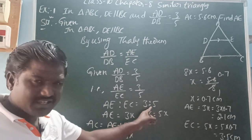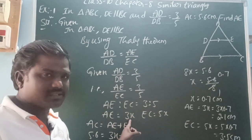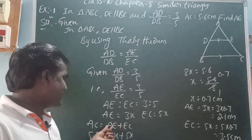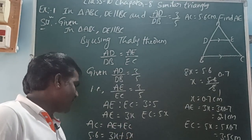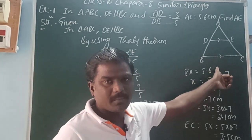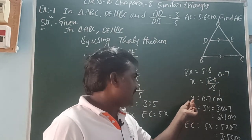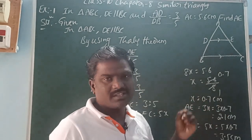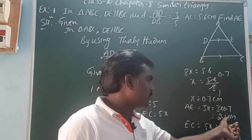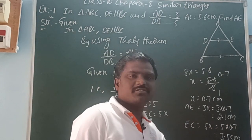AE has 3 parts and EC has 5 parts. Let each part be x, so AE equals 3x and EC equals 5x. AC equals AE plus EC, so 5.6 equals 3x plus 5x, giving 8x equals 5.6, x equals 0.7. Therefore AE equals 3 into 0.7 equals 2.1 centimeters, and EC equals 5 into 0.7 equals 3.5 centimeters.